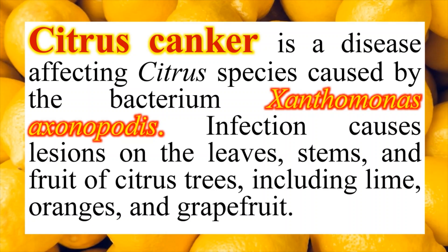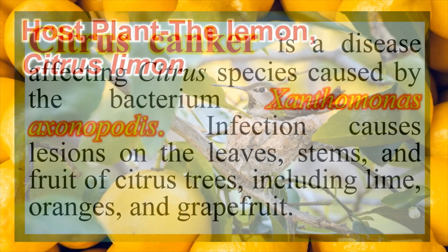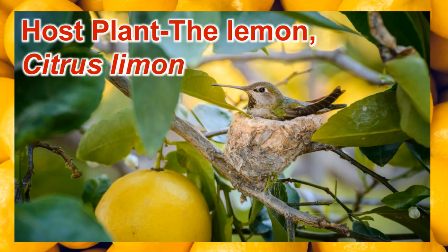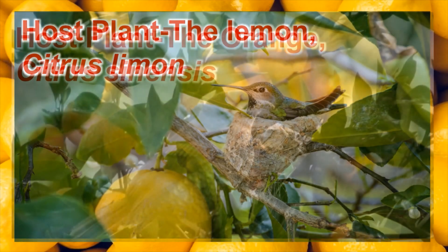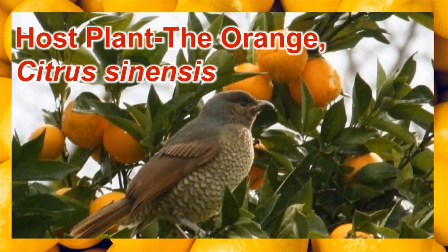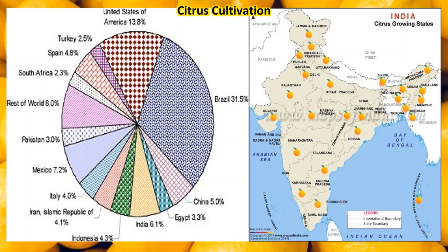The citrus canker infection is seen on leaves, stems, fruits, and different parts of the citrus trees. The plants usually affected are lime, lemon, oranges, and also grapefruit. This is the host plant — the citrus plant, the orange plant — another host.